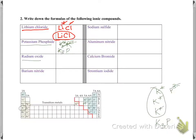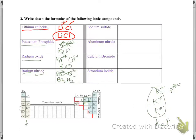Radium oxide: radium is in the second A group, so Ra has a two plus charge. Oxygen is in the sixth A group, so it has a two negative charge. Two plus cancels with two negative, so the formula is RaO. Barium nitride: barium is in the second A group, two plus charge. Nitrogen is in the fifth A group, three negative charge. Swap the numbers — the three goes to barium and the two goes to nitrogen, giving Ba3N2. Sodium sulfide: sodium is Na, first A group, one plus charge. Sulfide is the sixth A group, S two negative. Swap the numbers — the formula is Na2S.